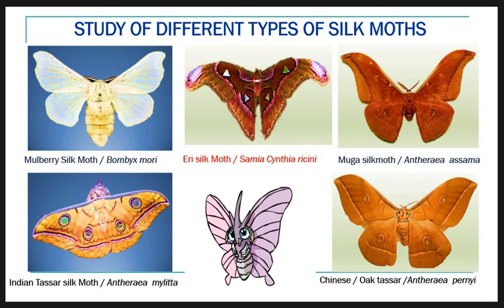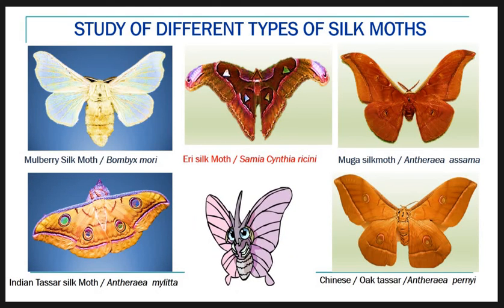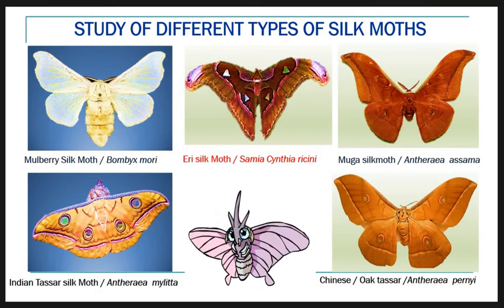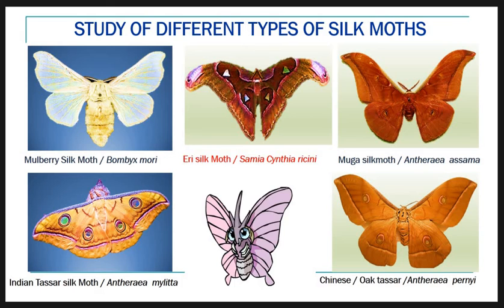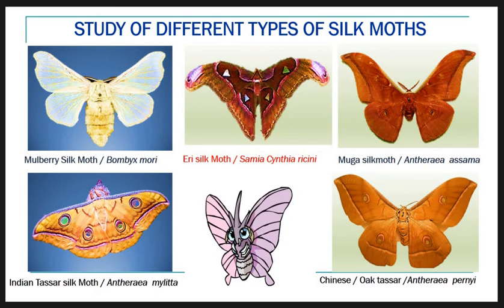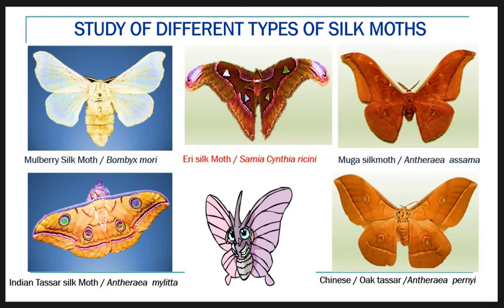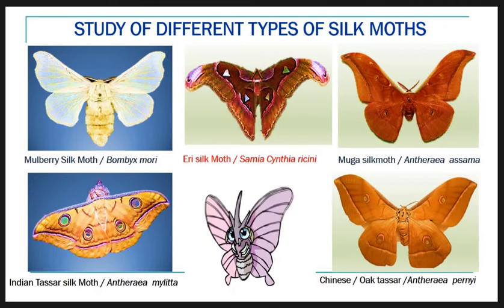Regarding the tassar silk moths: the Indian tassar silk moth has the biological name Antheraea mylitta. It is bivoltine and yields brownish tassar silk. The caterpillar of the Indian tassar silk moth feeds on ber, sal, oak, and fig trees. The second species is the Chinese oak tassar silk moth, Antheraea pernyi, whose silk is pale yellow-brown in color.